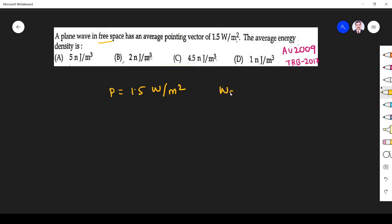Average energy density w average is given by 1 by 2 epsilon naught e square. I put epsilon naught because it is free space, otherwise it is 1 by 2 epsilon e square. So what I need is e. Once I know e, I can find energy density.